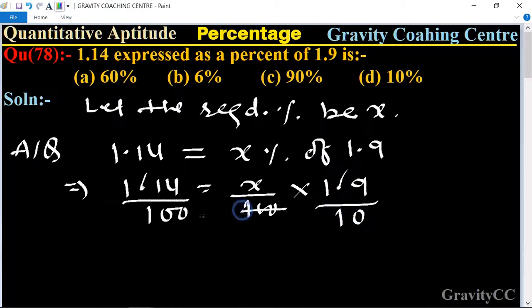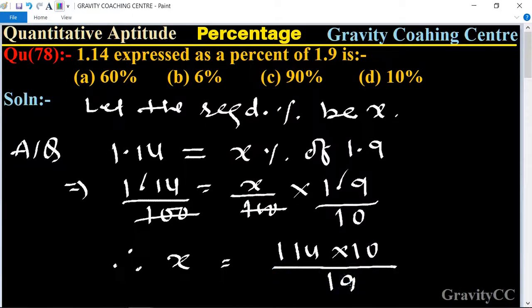114 divided by 19 equals 6, so x equals 6 times 10 which equals 60. Therefore x equals 60 percent, which is the required answer. Option A is the correct answer.